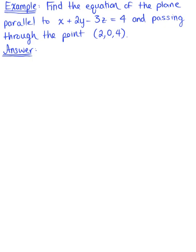Find the equation of the plane parallel to the plane x plus 2y minus 3z equals 4 and passing through the point 2, 0, 4.